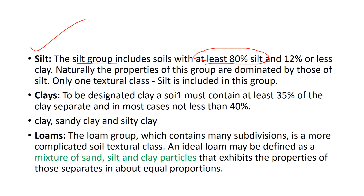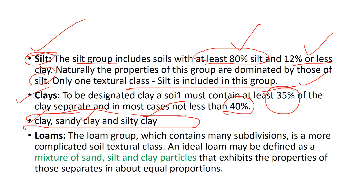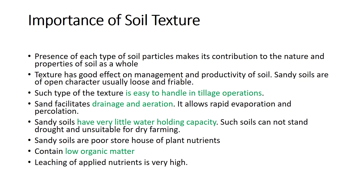The silt group includes soils with at least 80% silt and 12% or less clay. Properties are dominated by silt, and there is only one textural class with no subgroup. Clay soil must contain at least 35% clay, and in most cases not less than 40%. Clay soils are classified as clay, sandy clay, and silty clay. Loam is a mixture of sand, silt, and clay exhibiting properties of all three, and it has many subdivisions.